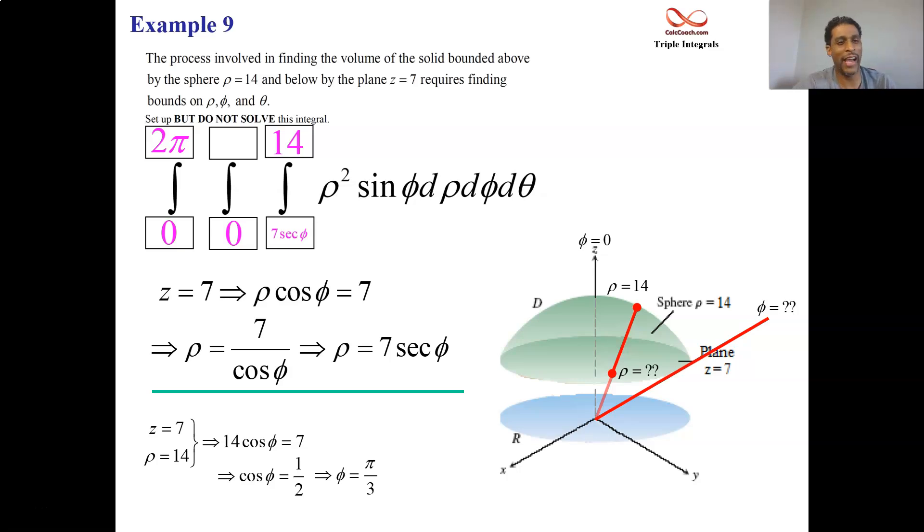And so we're done. We now have the upper bound on phi. We have all six bounds. And if we wanted to, we can go ahead and execute the integral. But this question wasn't asking it. So this is just an exercise in building up the bounds for a spherical triple integral for a non-standard question. It's kind of difficult there. But you made it through. Hopefully, you understood.